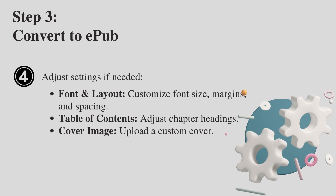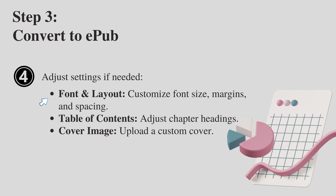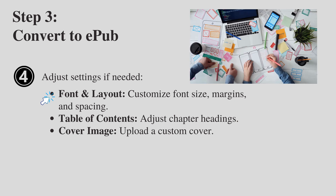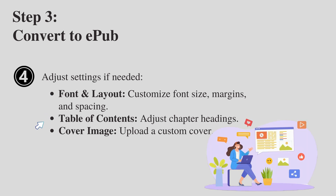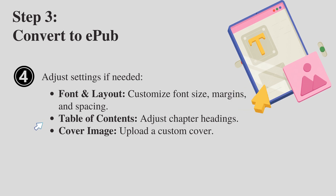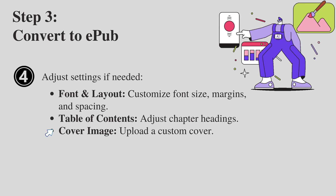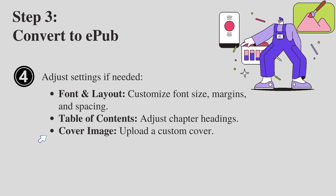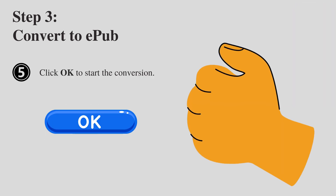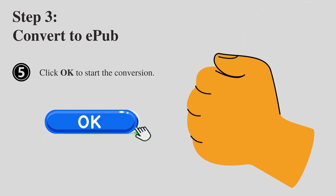Font and layout: you can customize font size, margins, and spacing. Table of contents: you can adjust chapter headings. Cover image: you can upload a custom cover. Fifth, click OK to start the conversion.